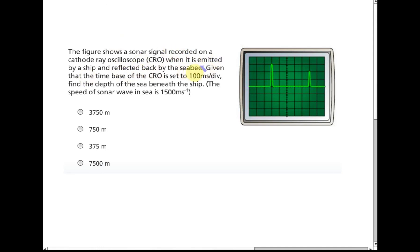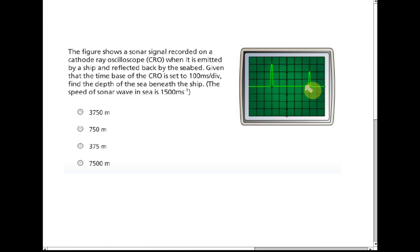The next figure shows a sonar signal recorded on a cathode ray oscilloscope when a signal is emitted by a ship and reflected back by the seabed. The time base of the oscilloscope is set to 100 milliseconds per division. Find the depth of the sea beneath the ship. From the trace, you can see that after five divisions the detector picks up the reflected wave.